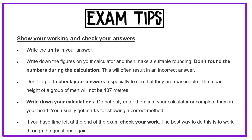We have some exam tips to share with you. Always write the units in your answer — for example, centimetres or centimetres squared. Write down the figures shown on your calculator and then make a suitable rounding. Don't round numbers during a calculation as this will often give you an incorrect answer. Don't forget to check your answers, especially to see that they are reasonable — for example, the mean height of a group of men will not be 197 metres. Write down your calculations; do not only enter them into your calculator or complete them in your head, as you usually get marks for showing a correct method.